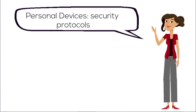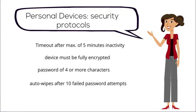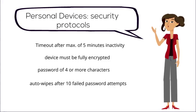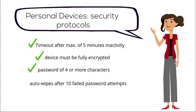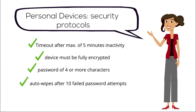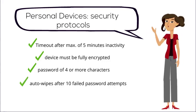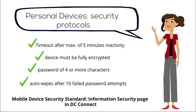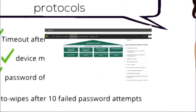In this case, users are required to adhere to the same security protocols that apply to using college-issued mobile devices, which include, but are not limited to, setting the device to timeout after 5 minutes of inactivity, fully encrypting the device, setting a password of 4 or more characters, and programming it to wipe itself automatically after 10 failed password attempts. For the full list of requirements, see the Mobile Device Security Standard on the Information Security page in DC Connect.